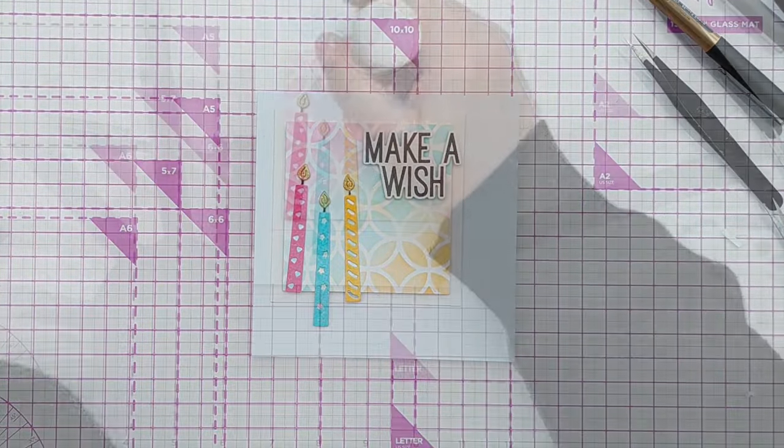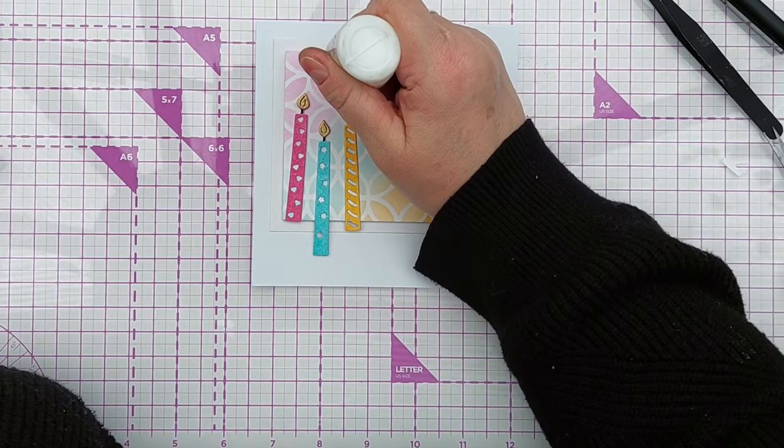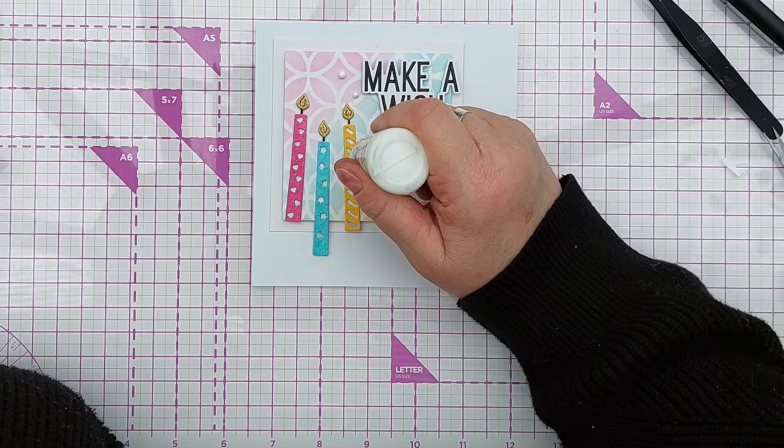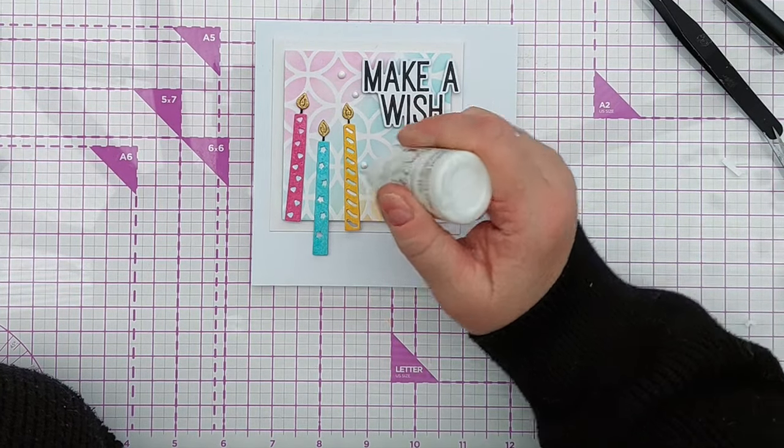To bring in a bit of extra dimension, I added my sentiment with foam tape and then brought in some white nouveau drops and dusted those around for a bit of gloss and again dimension and energy. And that is this card finished.